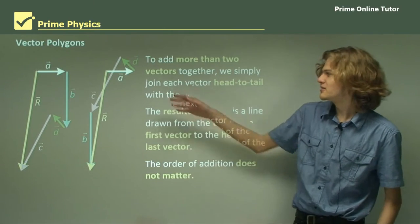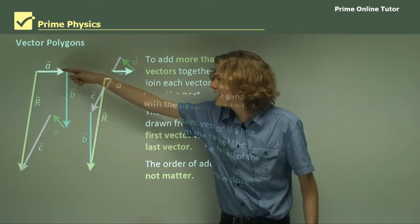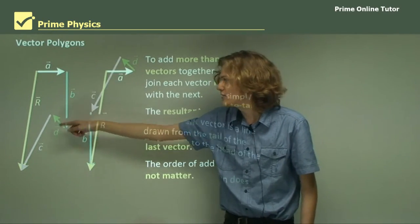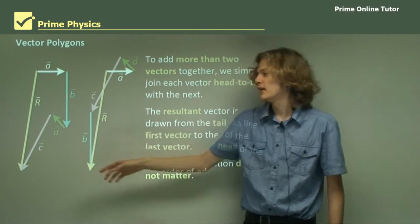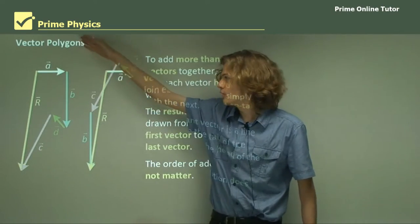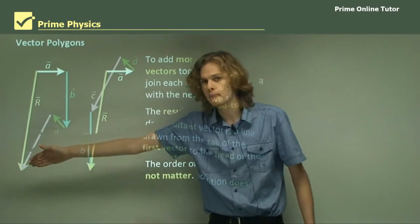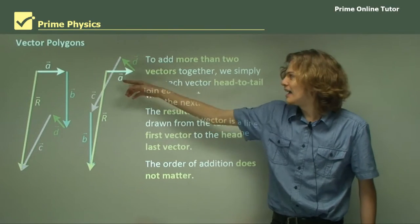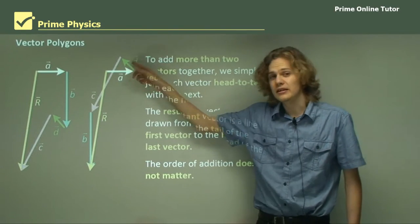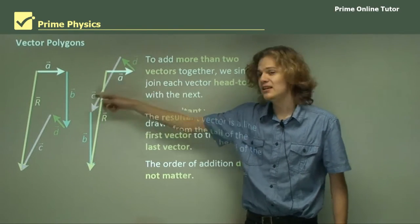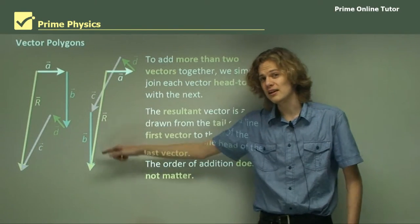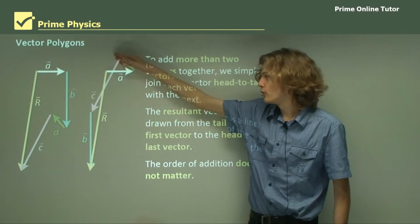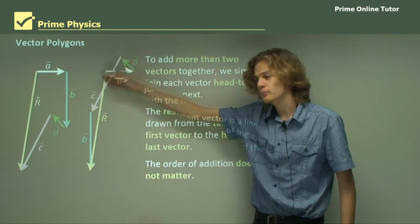In the first polygon, we add A, then B, then D, then C, and our resultant vector is a big yellow vector going from the top to the bottom. Here we add them in a different order — A, then D, then C, then B — but our resultant vector is still the same yellow vector going from the top to the bottom.